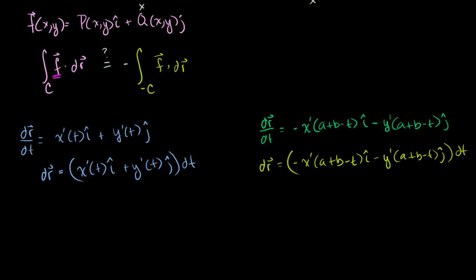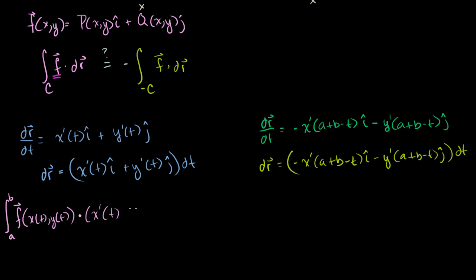For the forward (pink) curve, the line integral equals the integral from t = a to t = b of f(x(t), y(t)) dot [x′(t)i + y′(t)j] dt.